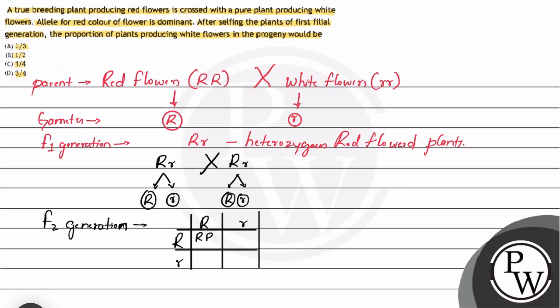The first offspring will be capital R capital R. Second offspring will be capital R small r. Third will be capital R small r. And the fourth will be small r small r.